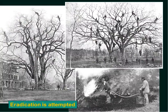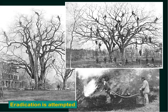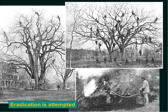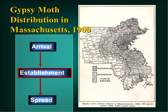Somewhere around 1890, the state of Massachusetts decided they were going to try to do something about this and made a very valiant attempt to eradicate gypsy moth from Massachusetts. Back at that time the whole concept of eradication was pretty unknown — no one had really successfully done it for any insect — and this is probably the first insect eradication attempt ever undertaken. They had pretty primitive methods, and unfortunately by 1900 the effort failed; by 1900 the species was essentially established in the area around Boston.